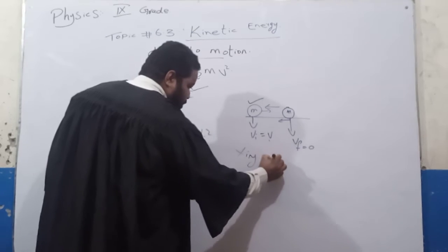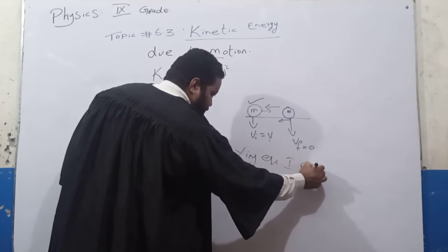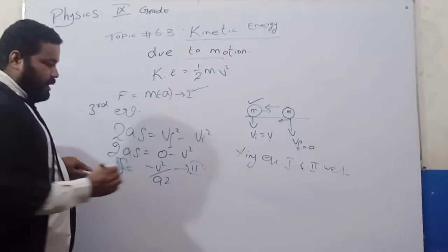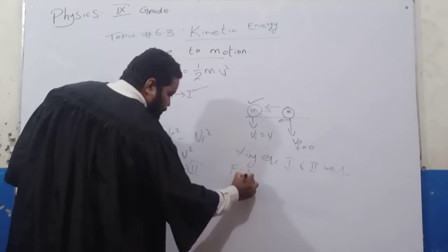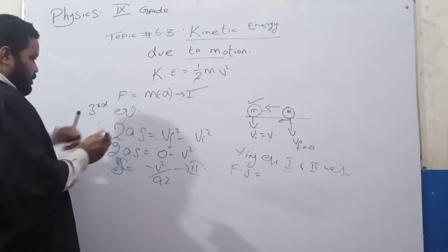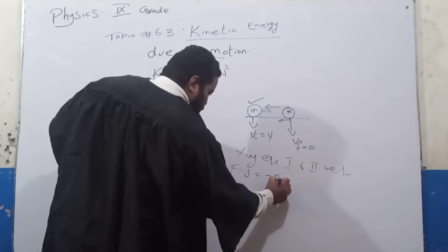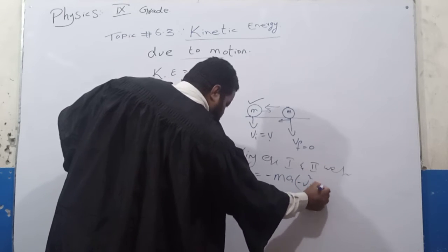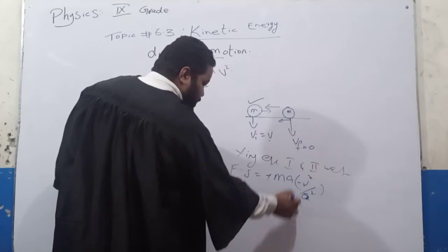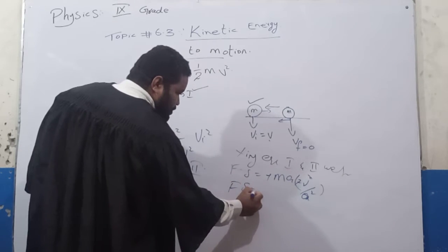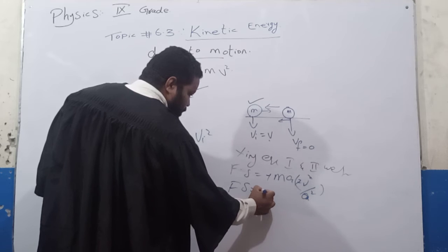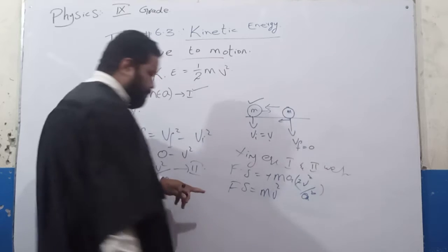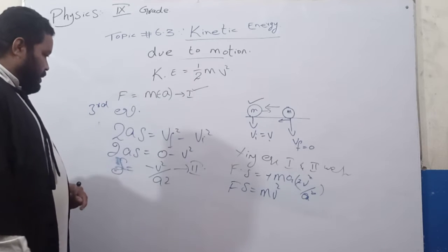Now multiply equation 1 and 2. Left side multiplied, as dot s equals to. Right side multiplied, minus ma into minus v squared by 2a. The negatives cancel. Fs is equal to 1 by 2 mv squared. So you get it.